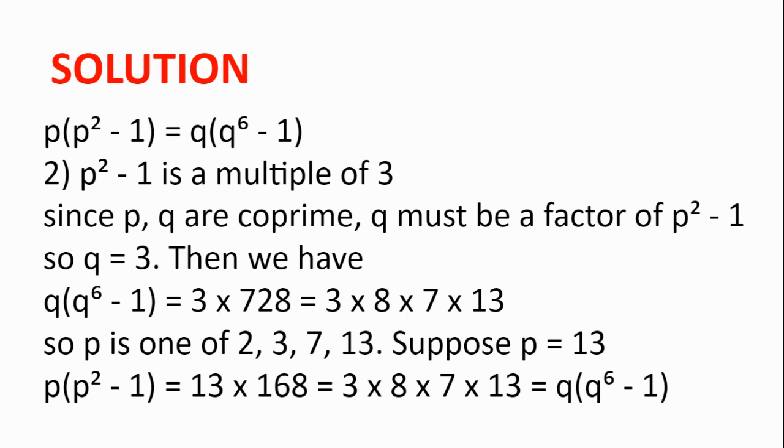We then have q(q⁶ - 1) = 3 × 728, which is equal to 3 × 8 × 7 × 13. And so because p is prime, p is one of 2, 3, 7, or 13.